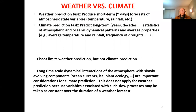Weather is the task of producing short-term predictions of atmospheric state variables on the order of days, where we're interested in specific values like temperature and rainfall. In climate prediction, we want predictions over many years, possibly decades or a hundred years or more, interested in the statistics of atmospheric and oceanic dynamical patterns. Chaos limits weather prediction, but it does not limit climate prediction.